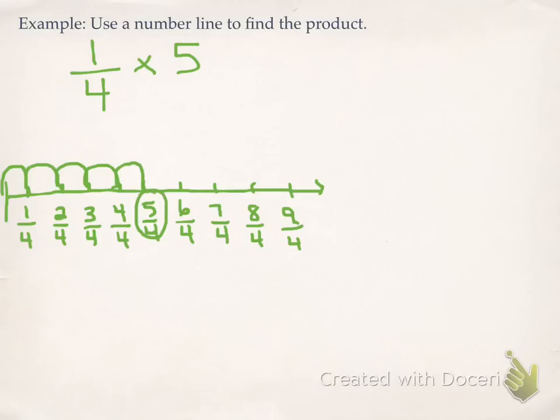So that tells me that my answer, 1 quarter times 5, is actually 5 quarters. Now, of course, we can't leave it like that. 4 can go into 5 once, and I'd have 1 left over, so my answer would be 1 and 1 quarter.